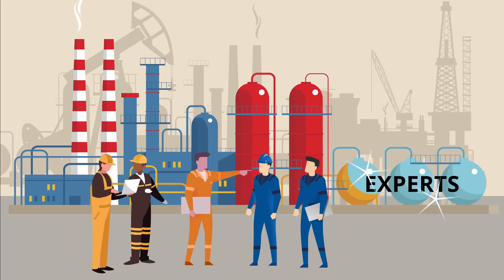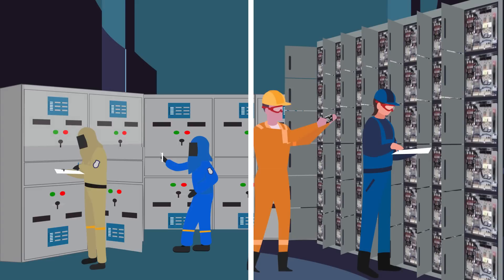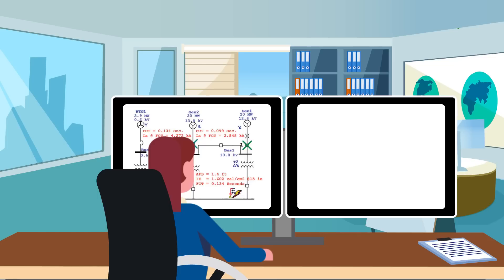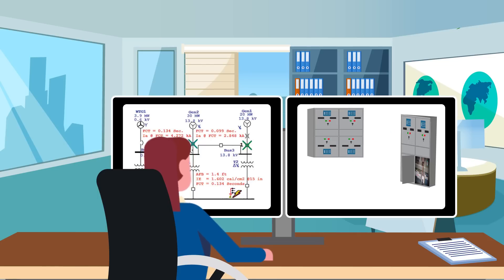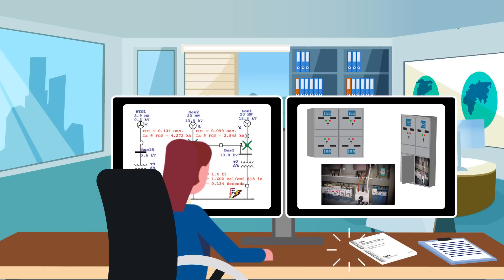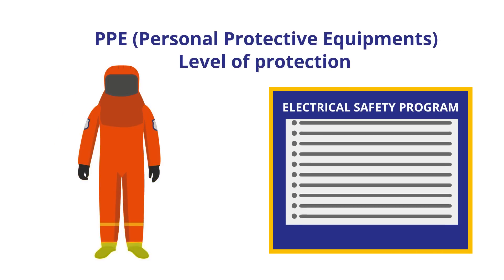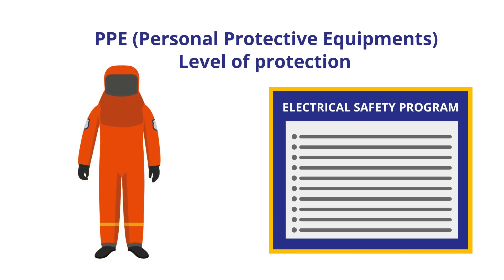Document field verification with as many photos as possible for future reference. Next, develop a power systems model using field verification data and perform an arc flash assessment using IEEE 1584 or NFPA 70E guidelines to determine worst-case incident energy levels.